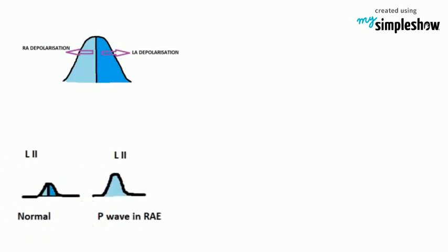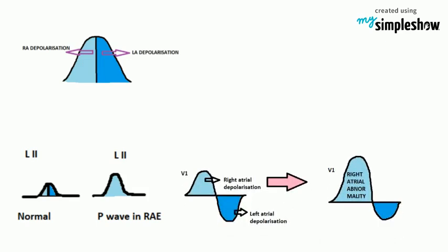The P-wave will be greater than 2.5 millimeters in lead II and peaked. In lead V1, due to increased time and spread in depolarization due to RAE, the first positive biphasic pattern will be more than one small box in amplitude. RAE also affects P-wave axis.